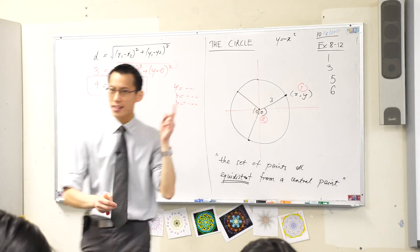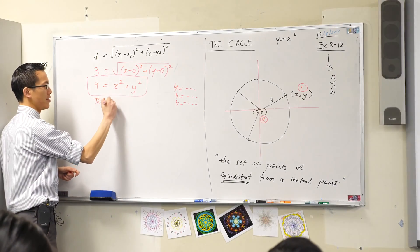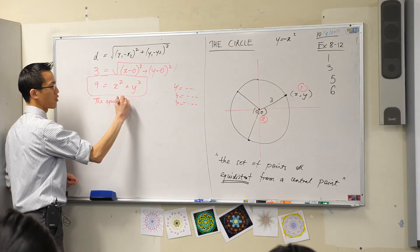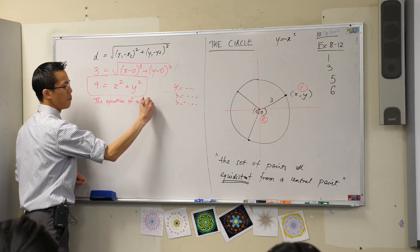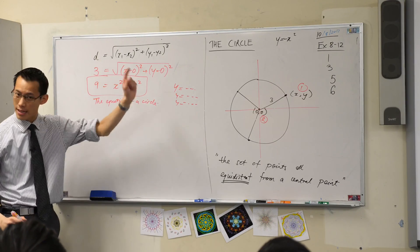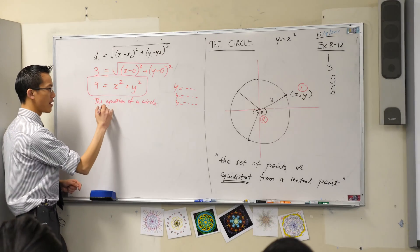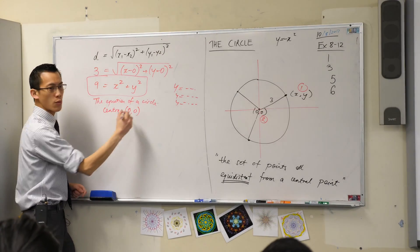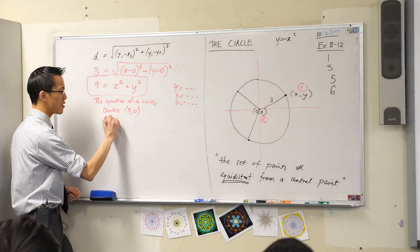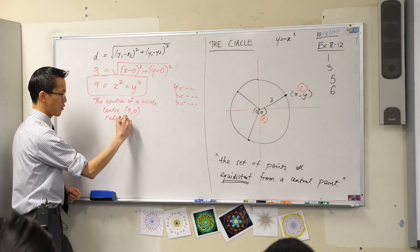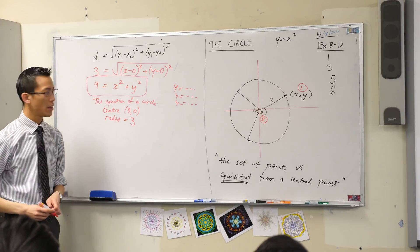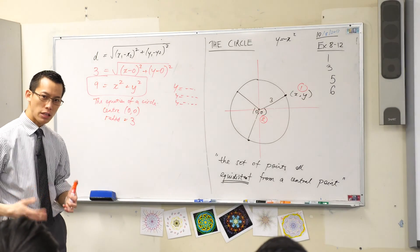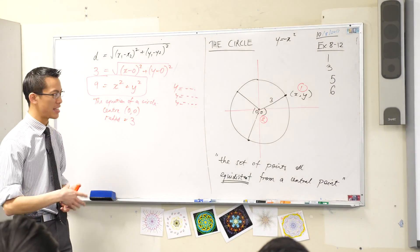So this guy is the equation of a circle. But it's not just any circle—it's this circle. It has the center at the origin, (0, 0), and it has a radius of 3. So therefore,